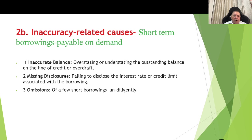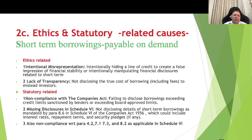Inaccuracy causes for short-term borrowings payable on demand: Number one — inaccurate balances, overstating or understating the outstanding balance on the line of credit or overdraft. Number two — missing disclosures, failing to disclose the interest rate or credit terms associated with the borrowings. Number three — omission of a few short-term borrowings, done undiligently.